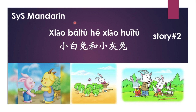Welcome to SysMandering. SysMandering stands for Systematic Learning of Mandarin Chinese. In today's video, we are going to introduce a Chinese story called 小白兔和小灰兔, a little white rabbit and little gray rabbit. I'm going to read this story sentence by sentence and explain it. And at last, I'm going to read this story at normal speed. Let's get started.